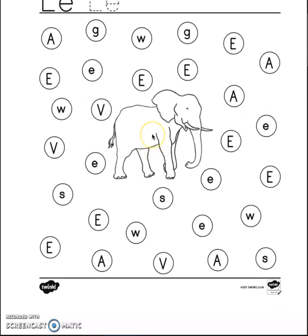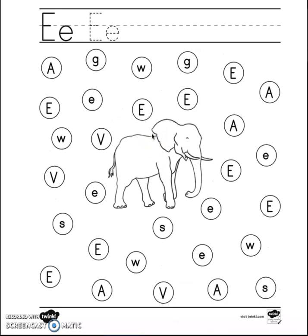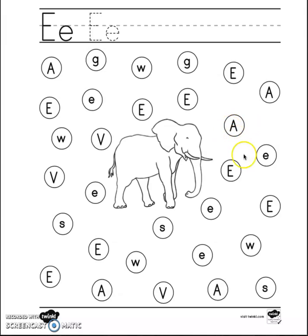So this is kind of like the worksheet we did yesterday with letter A. Today, since we're working with letter E — sounds 'e' — you have to color just the letter E. So you have to color this one, this one, this one.